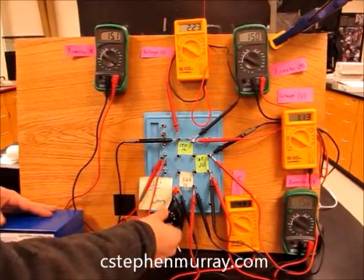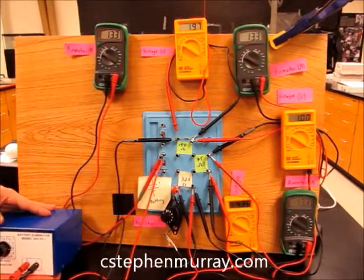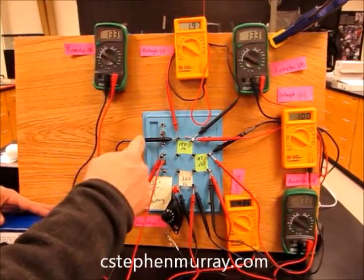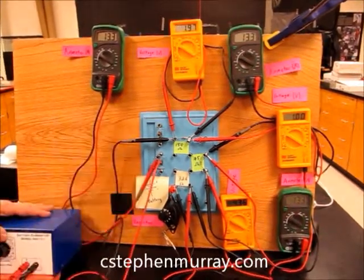Watch what happens as I increase the resistance. I increase the resistance, I'm restricting the flow of current, and it all backs up. So if you change the resistance somewhere in a series circuit, it changes the current everywhere.